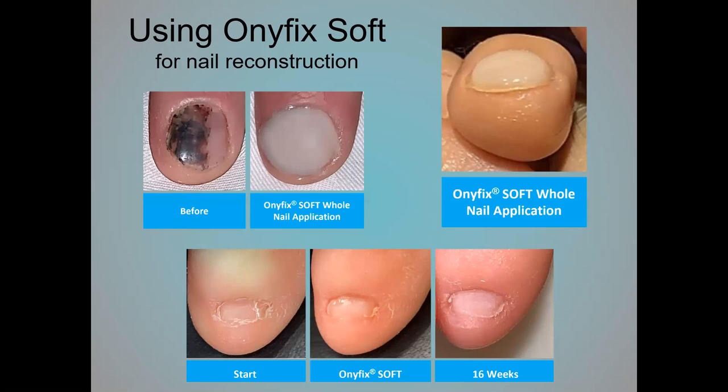Onyfix's soft application is great for reconstruction and covering up. Here we have a nail on the left with a subungual hematoma that the person didn't want to wait to grow out. A soft application over the entire nail plate was used, and the nail can be polished or buffed to look like a normal nail. One of the more exciting uses of soft Onyfix is to help reestablish cohesion when there's a split nail. Looking at the result after 16 weeks, the split has come together and the nail has grown to a more normal looking nail.